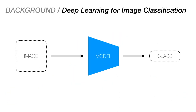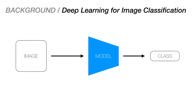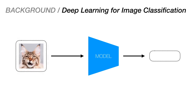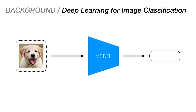To begin, let's take a look at a typical image classification pipeline. We have a model that takes an image as an input and outputs a class label for that image. Deep neural networks have been shown to be particularly adept at this task, in some cases even better than humans. For example, for this image, the model would label it as a cat. Or, in this instance, it would label the image as a dog.